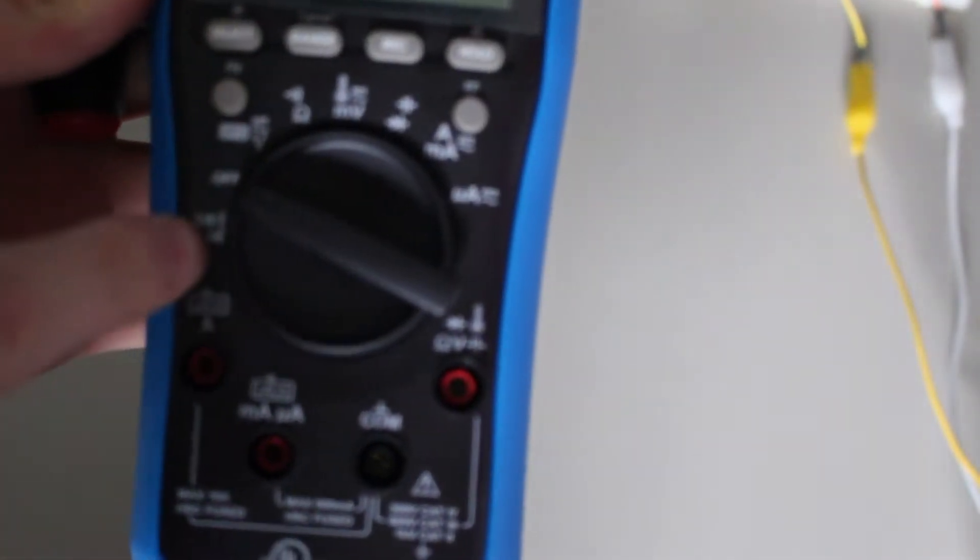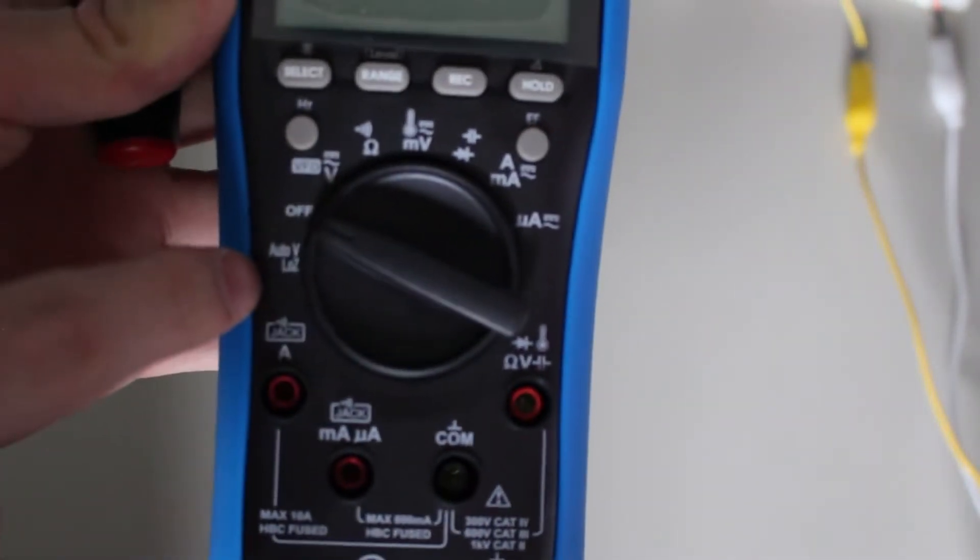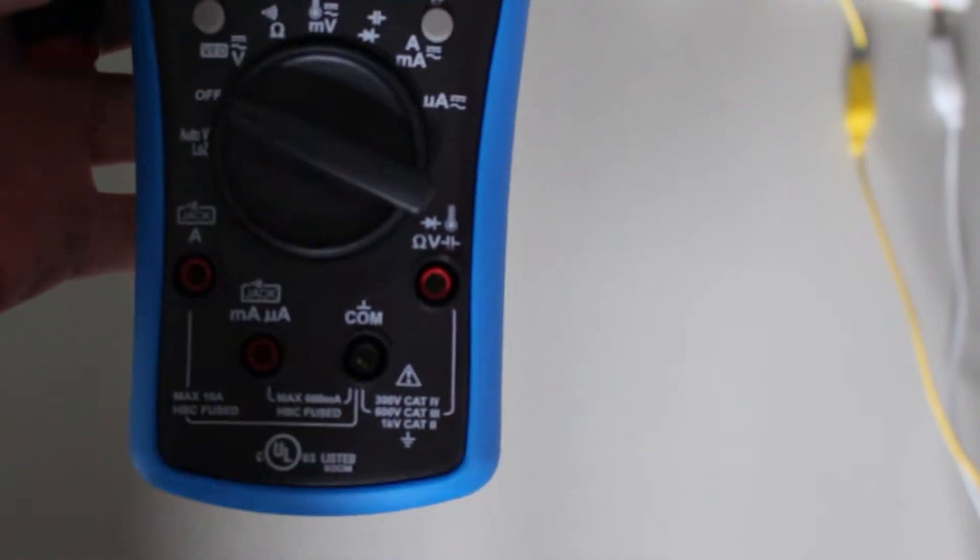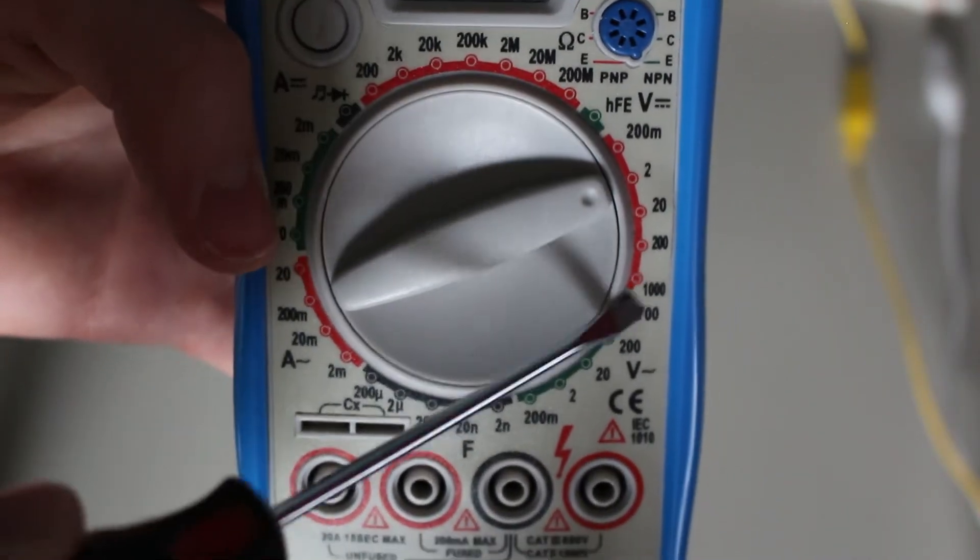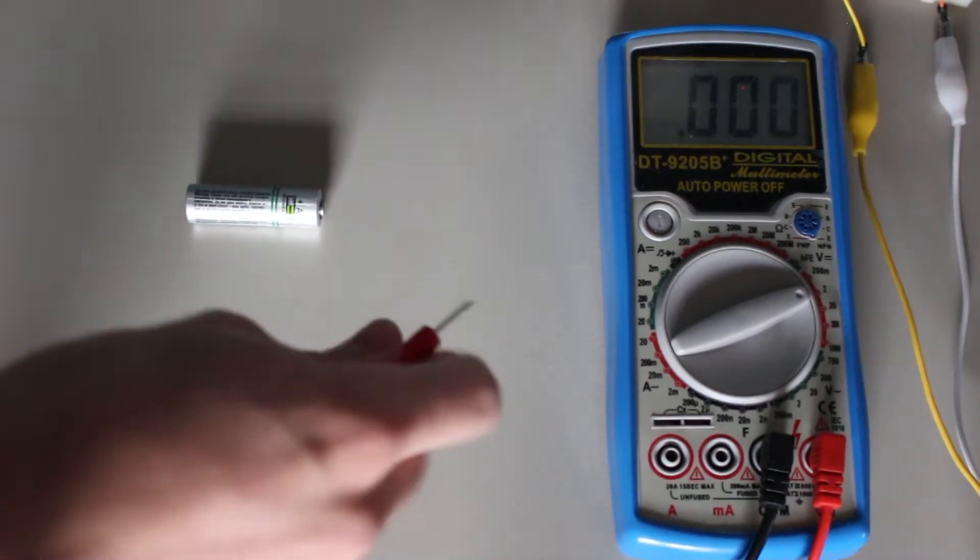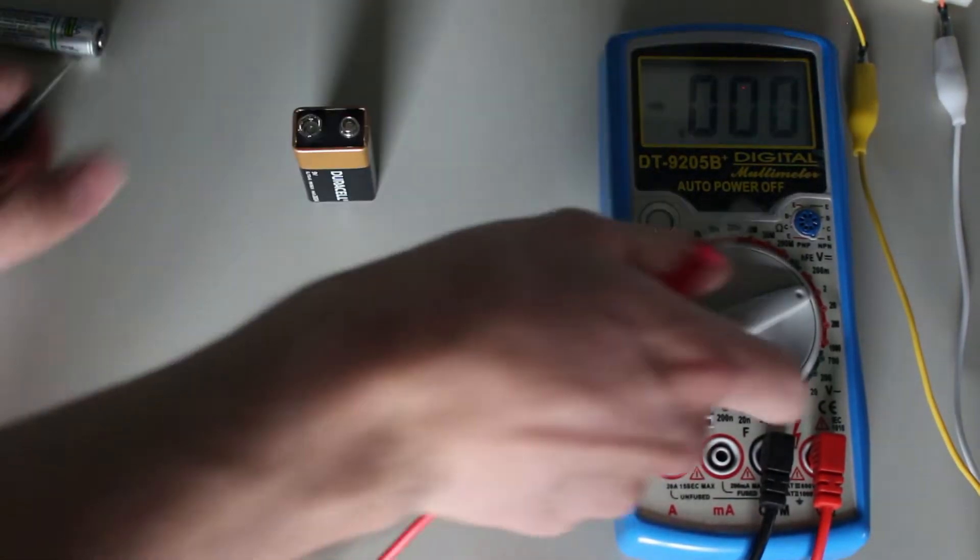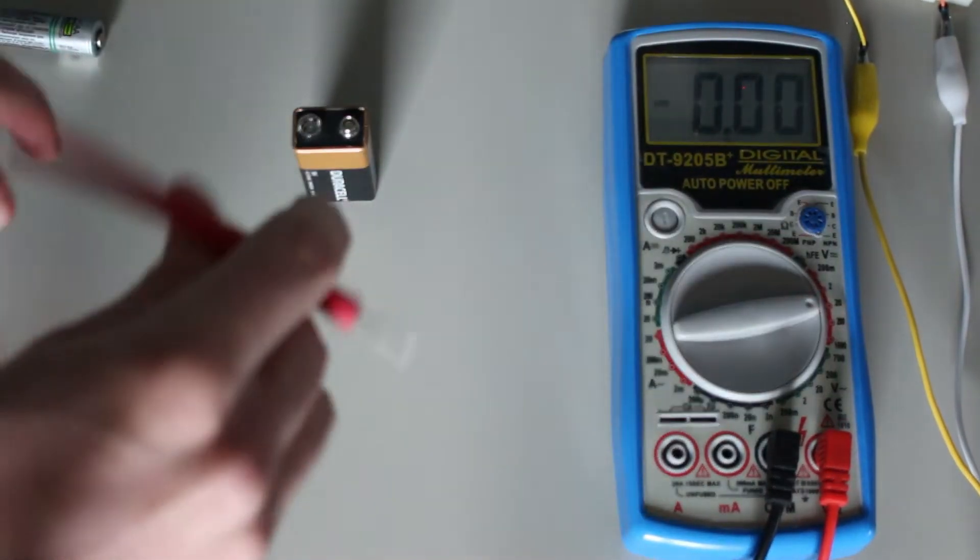The first thing we can immediately see is that the expensive meters have auto-ranging, while the other ones make you select your range manually. The auto-ranging capability of these meters is certainly very useful and will make your life far more convenient, especially if you are probing several different voltage ranges.